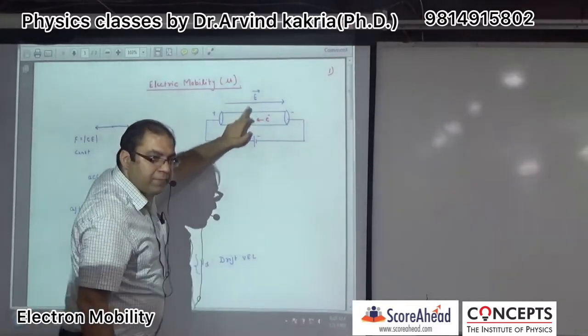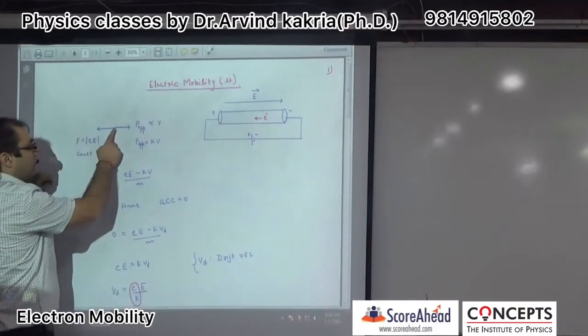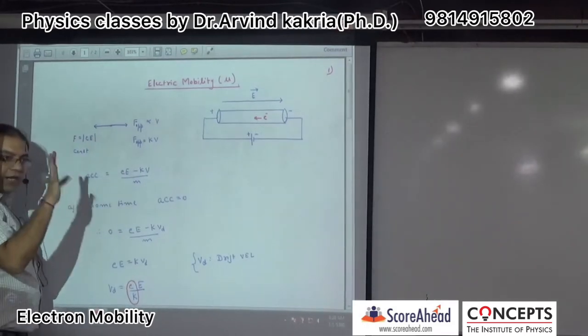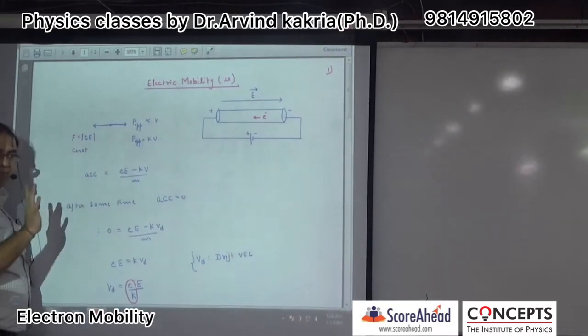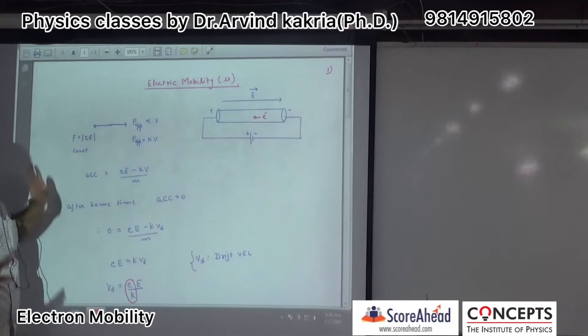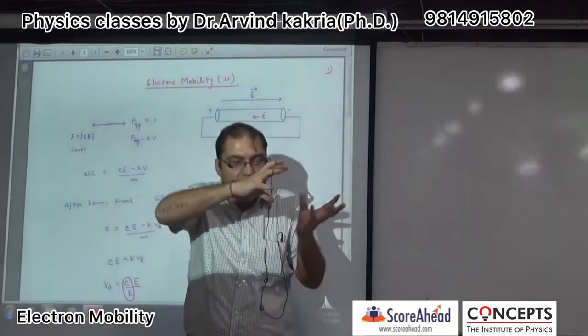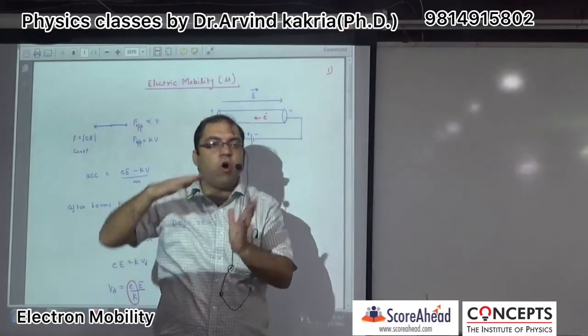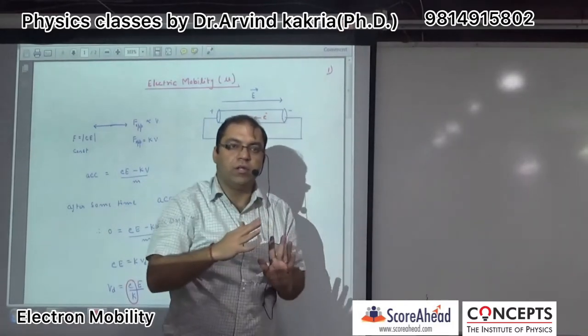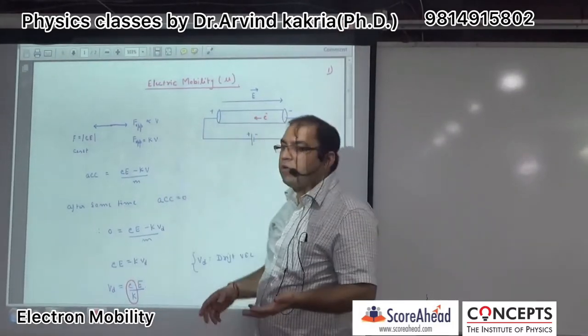The electric field is applied. When the electron is running in a conductor, it experiences opposition due to collisions. The opposing force is dependent on its velocity.